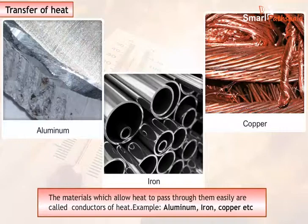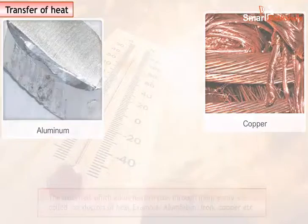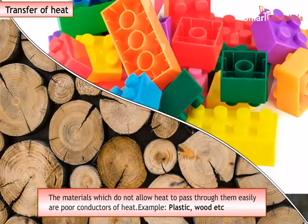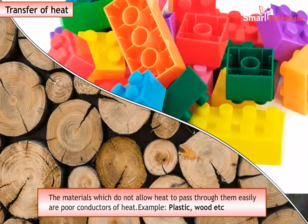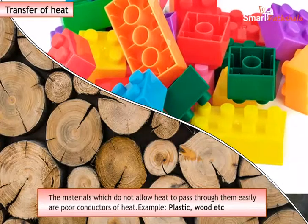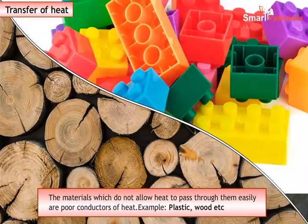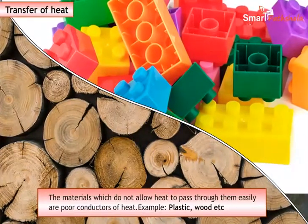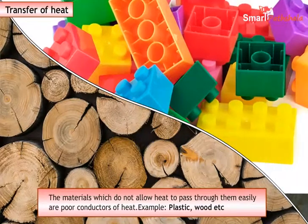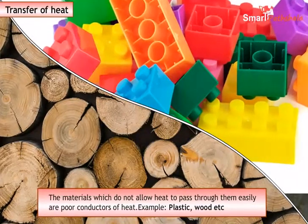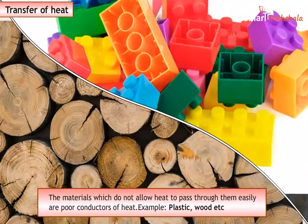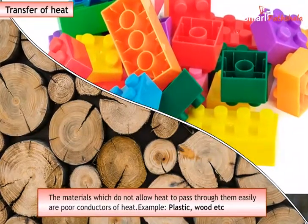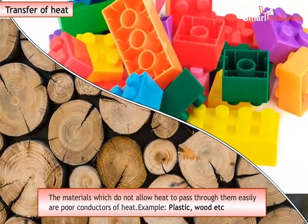The materials which do not allow heat to pass through them easily are poor conductors of heat. Poor conductors are known as insulators. Plastic, wood, etc. are examples of insulators. Try to list out some more conductors and insulators.